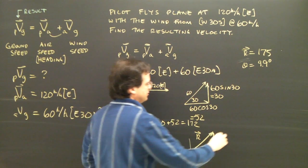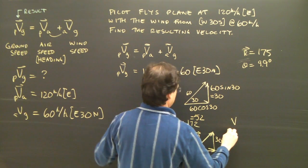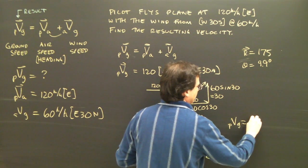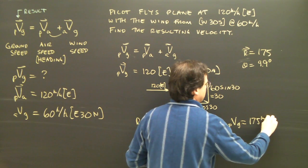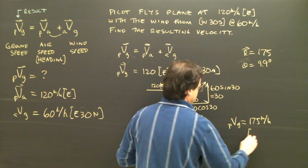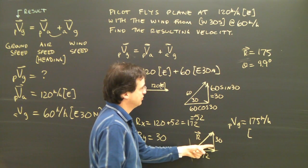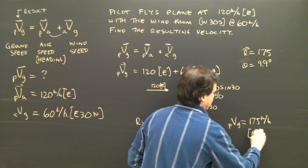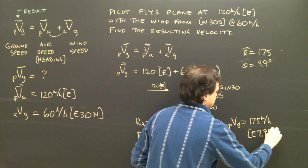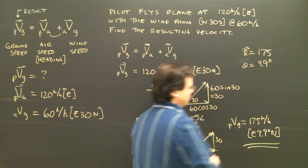So my resultant, the velocity of the plane relative to the ground is 175 kilometers per hour. And it is east, 9.9 degrees north.